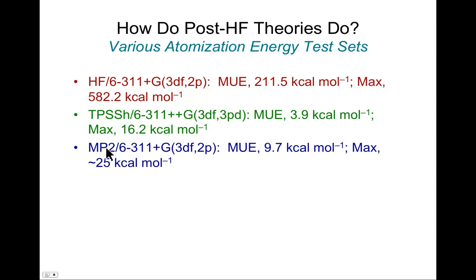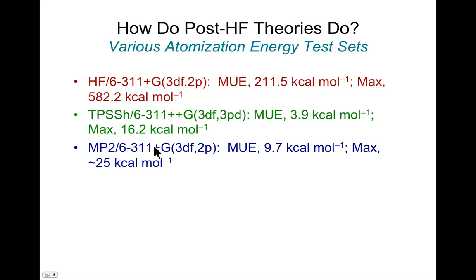Now MP2 — the next step up, still the same basis set. The mean unsigned error has dropped from 211 kcal/mol to 10. That's a factor of 20 improvement in accuracy, and the maximum errors dropped to about 25 — also a little better than a factor of 20. The cost of this calculation is not terribly extensive, so that was certainly a worthwhile improvement in accuracy.